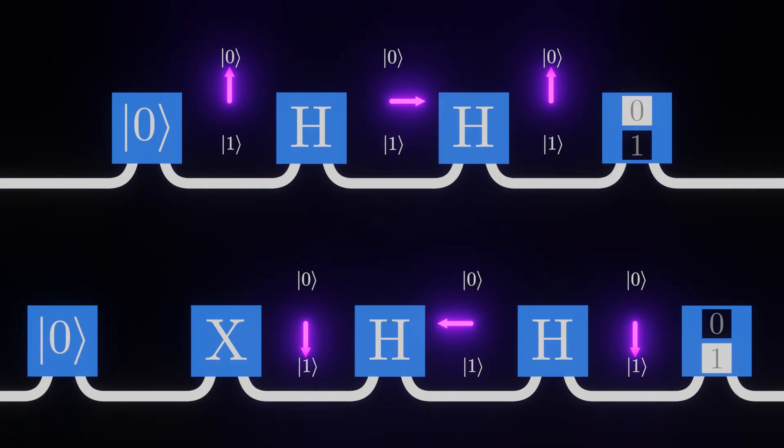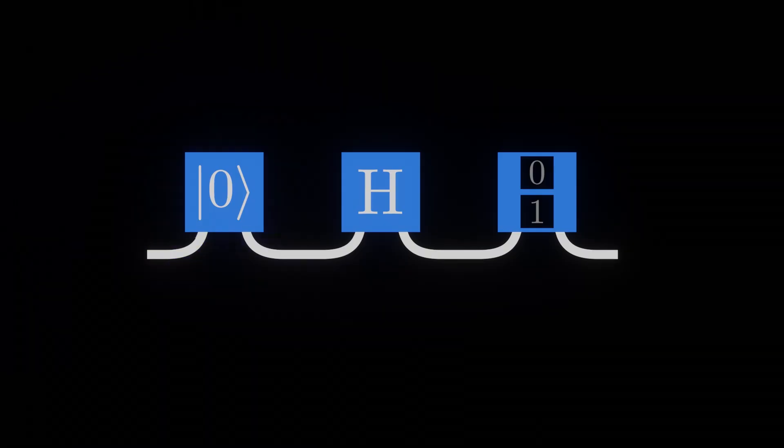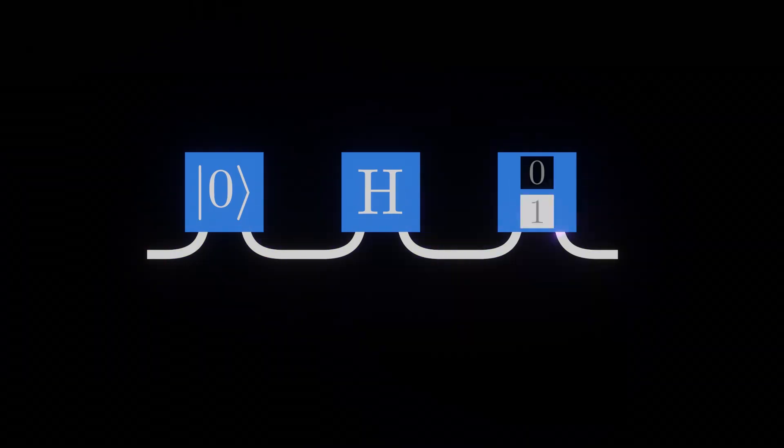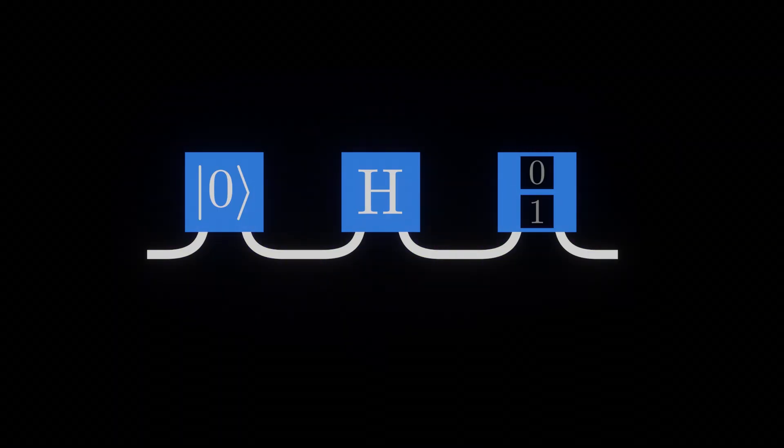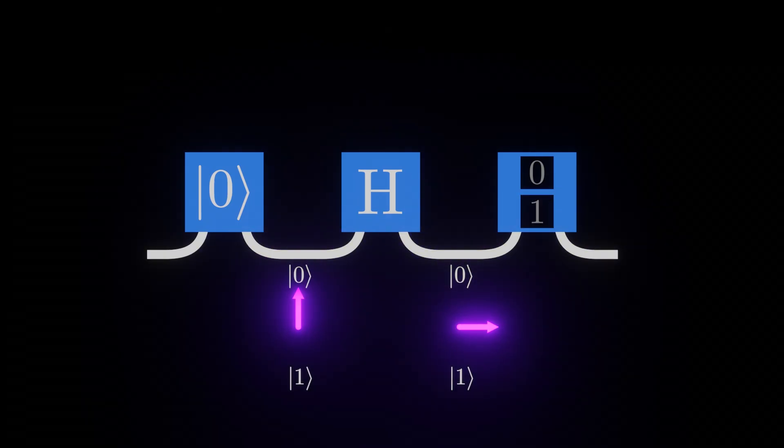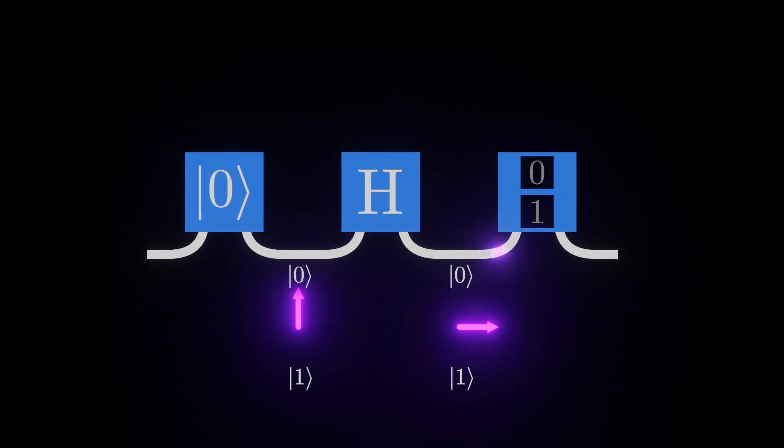Let's now use this effect to get a better understanding of measurement. Like we saw before, placing a measurement after an H gate produces random results. This makes some amount of sense because it's the most accurate picture we can get at the superposition with such a blunt measurement.